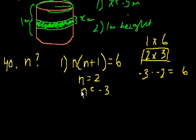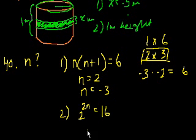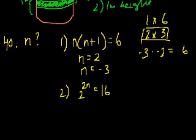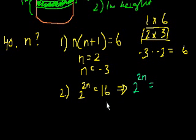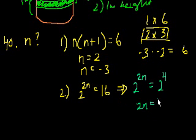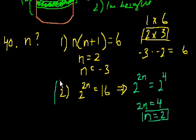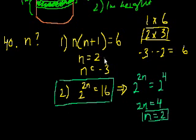Statement 2: 2 to the 2n is equal to 16. Whenever you have a variable in the exponent, your goal is to get everything in the same base. So 2 to the 2n equals 2 to the fourth, since 16 is 2 to the fourth. Therefore 2n equals 4, and n equals 2. This statement alone is enough to figure it out. Statement 1 alone is not. So the answer is B — statement 2 alone is sufficient.